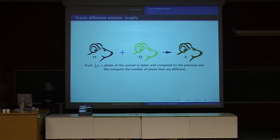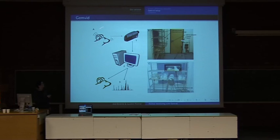The principle we use is frame difference analysis. If you take a rat at one time and you take a picture of it, and then at the second time you take another picture of the rat, every 1/25th of a second, you can compare the two images and compute the number of pixels that are different, here in green. If I move my fingers, you have some green pixels showing.